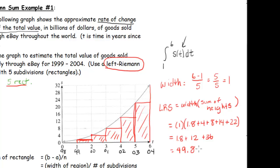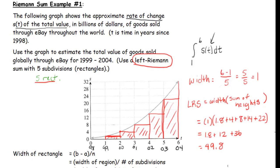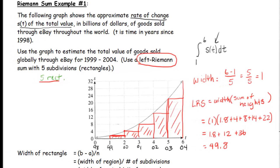We've calculated the value. Our units are billions of dollars, so the total value of goods sold globally through eBay between 1999 and 2004 is approximately 49.8 billion dollars.